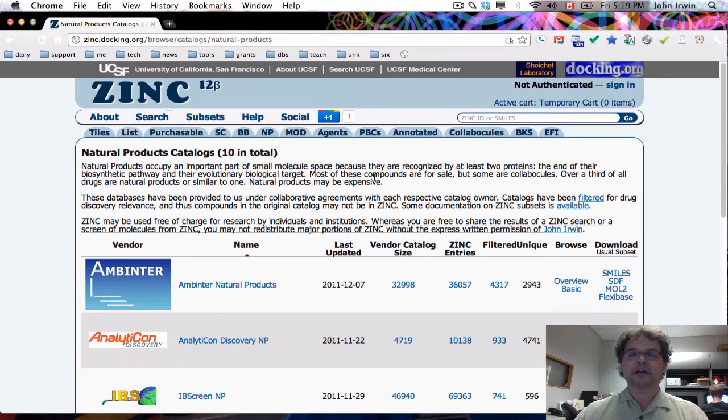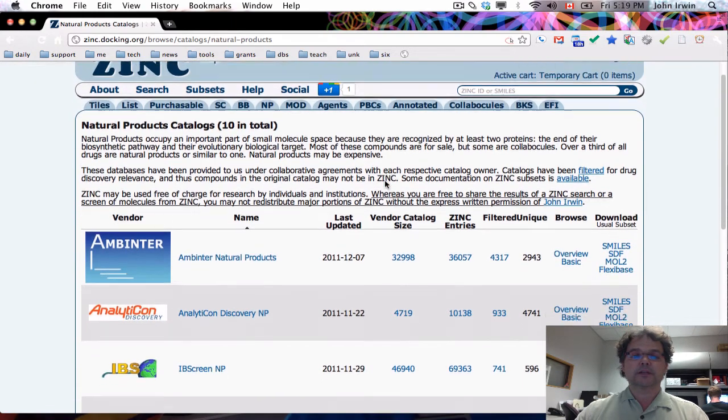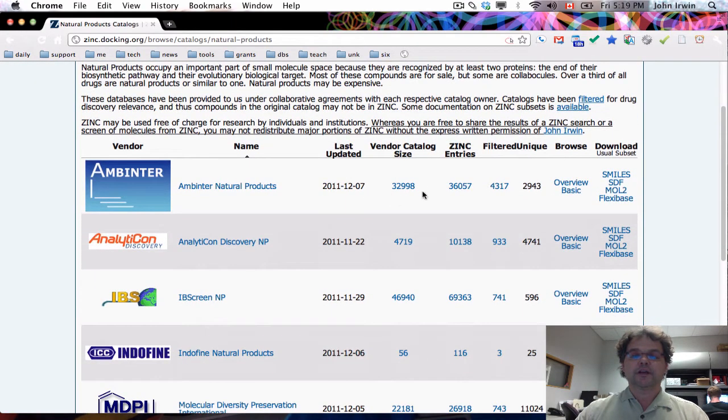There are 10 natural product catalogs in ZINC, and they're here below. In each case, we have a number of molecules in the source catalog, and then a resulting number that are in ZINC. How could the number loaded be higher than the number in the source catalog? The answer is some of those molecules may have been stereochemically ambiguous, and so we enumerated up to four stereoisomers per ambiguous molecule. We've also filtered out some molecules because they're just not compatible with docking. For example, vancomycin is a natural product.